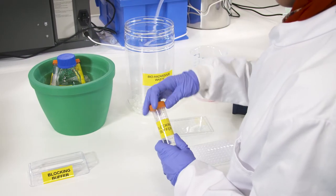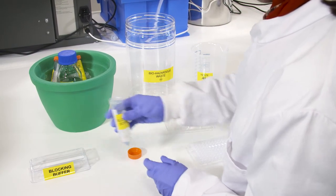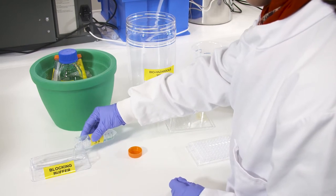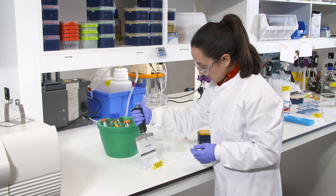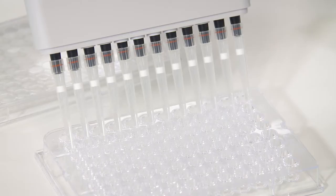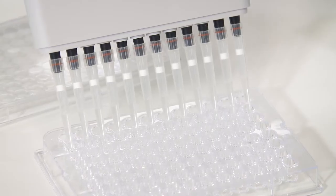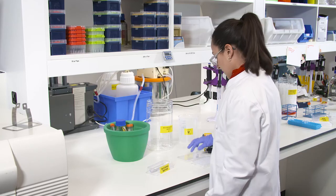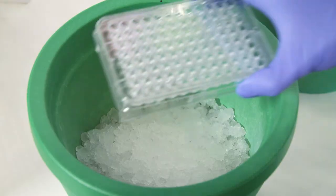Resuspend your cells in the blocking buffer which consists of PBS with 10% serum. However, the type of serum will depend on the host species of your primary and secondary antibodies. Block the cells for 30 minutes at 4 degrees Celsius.